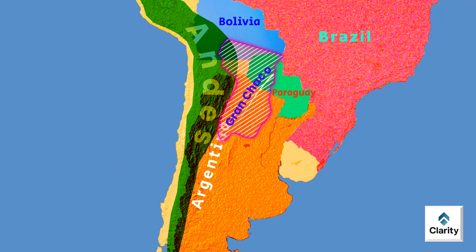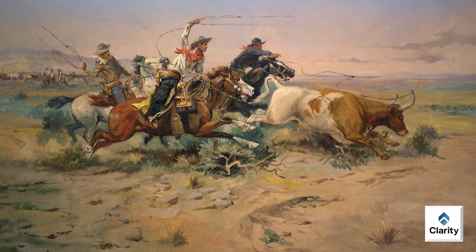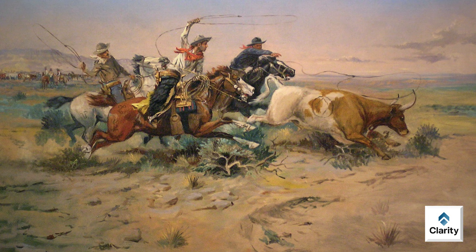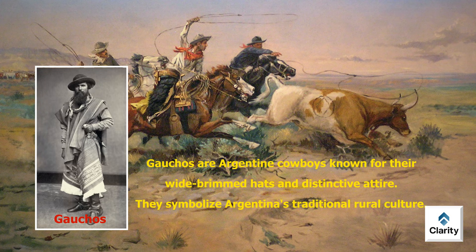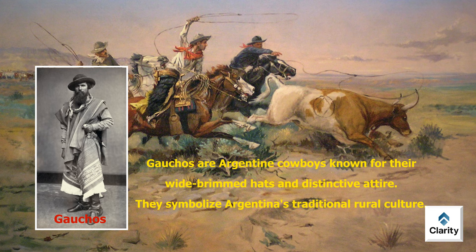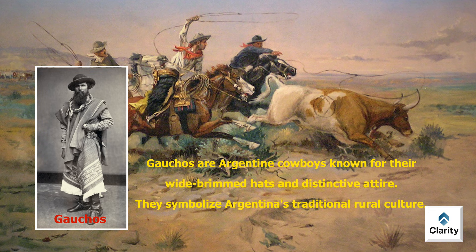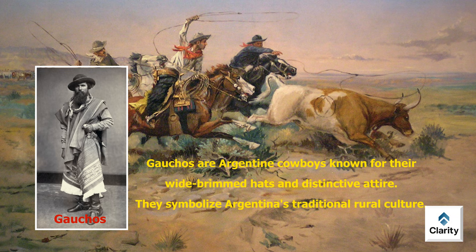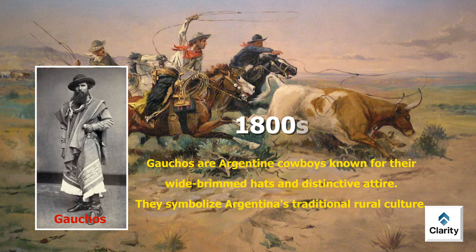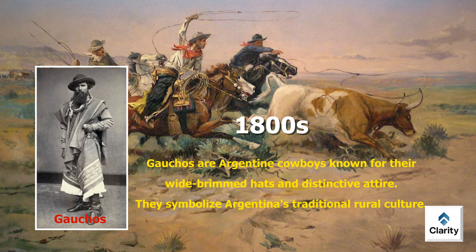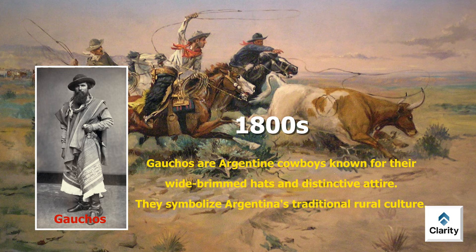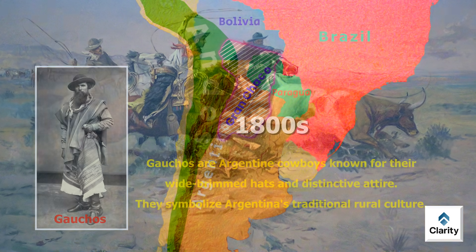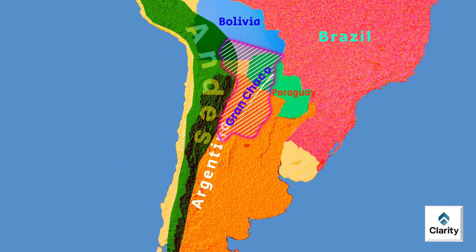Culturally, Gran Chaco holds a special place in Argentina's history. It is famous for traditional cattle ranching and is known as the land of gauchos. Gauchos are Argentine cowboys known for their wide-brimmed hats and distinctive attire — they symbolize Argentina's traditional rural culture. Gauchos first emerged in the 18th century, herded cattle and became skilled horsemen. Today, the gaucho is an iconic cultural figure in Argentina, closely linked to the vast rugged landscapes of Gran Chaco.